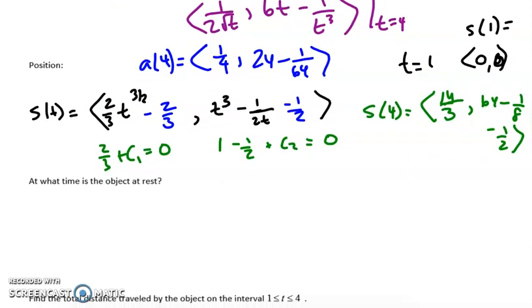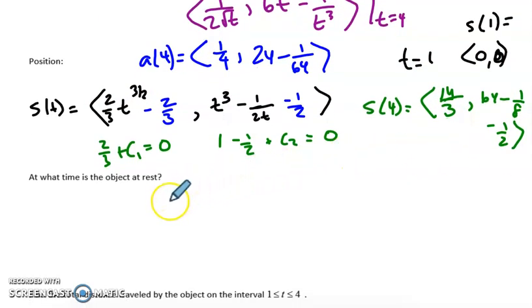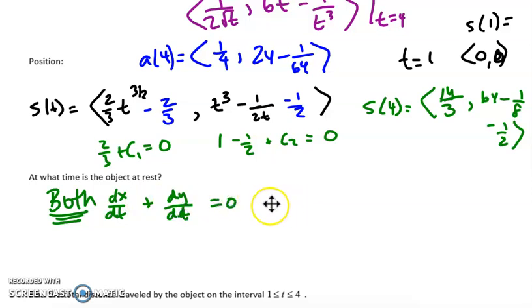And then the next question about the same problem says, when is the object at rest? Well, the object at rest, this is critical that you understand this. The object at rest is at rest when both dx/dt and dy/dt equals 0. They separately have to equal 0.